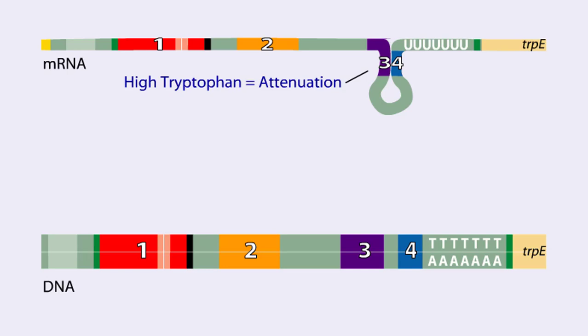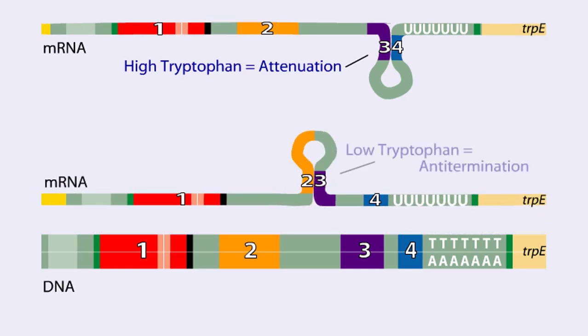When tryptophan levels are low, region 2 pairs with region 3. This structure does not terminate transcription.